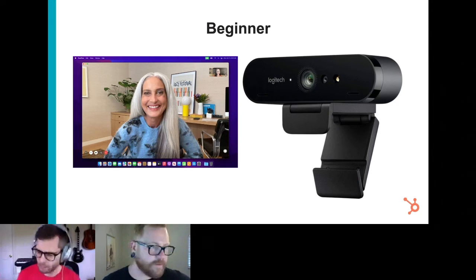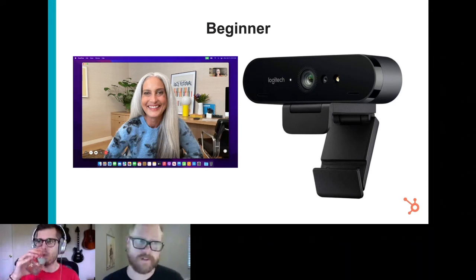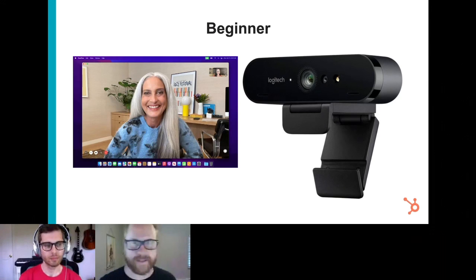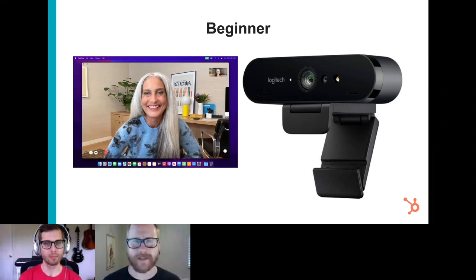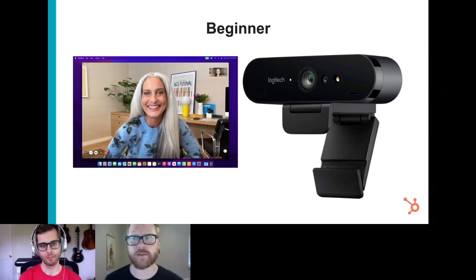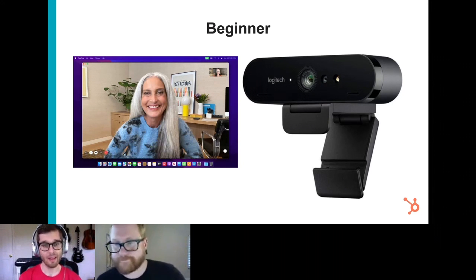Cell phones are also entry-level cameras worth including here. Everyone has an iPhone or Android with a pretty decent camera — most are at least 1080p, a lot can do 4K and HDR, and the new iPhones have cinematic defocus and other interesting features. It's a camera you have in your pocket all day. Not only can you use it in selfie mode to record yourself, but you can also branch out, film some B-roll, and start getting additional shots.